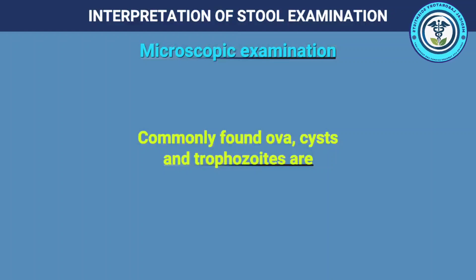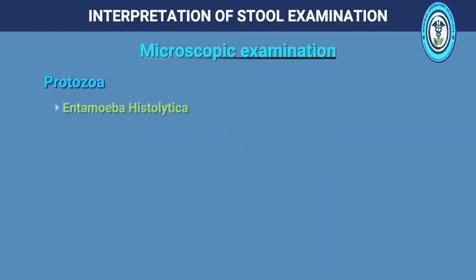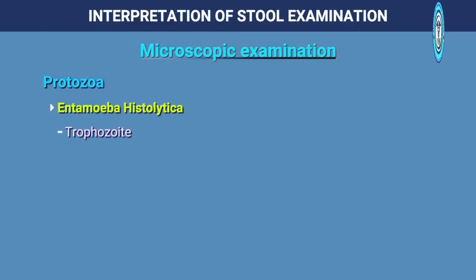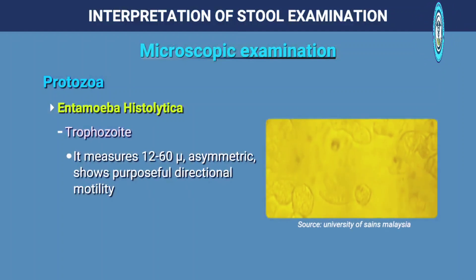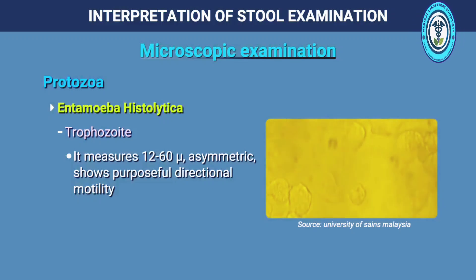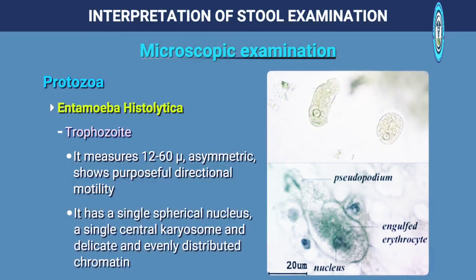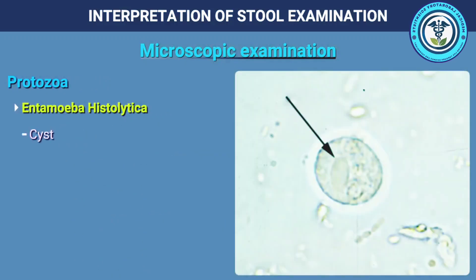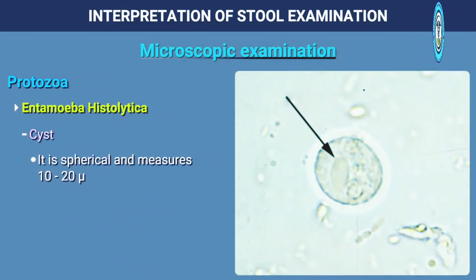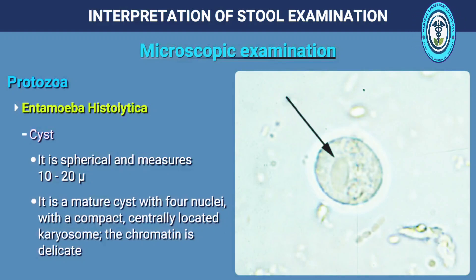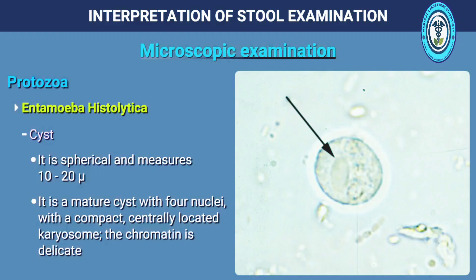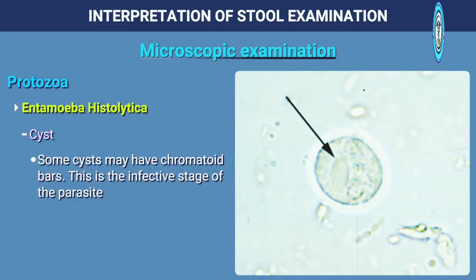The commonly found ova, cysts and trophozoites include Entamoeba histolytica trophozoite, which measures 12 to 60 microns in size. It is asymmetric, shows motility and has a single spherical nucleus, a single central karyosome and delicate and evenly distributed chromatin. The cyst is spherical, measures 10 to 20 microns, and is a mature cyst with 4 nuclei with a compact centrally located karyosome. The chromatin is delicate and some cysts may have chromatoid bars. This is the infective stage of the parasite.